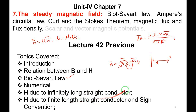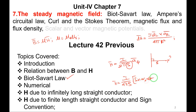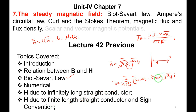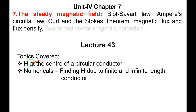For a finite length conductor, the formula is H = I/(4πρ) · (sin α2 - sin α1) · aφ. The sign convention: if α1 and α2 are measured above the perpendicular line they are positive; below it they are negative.